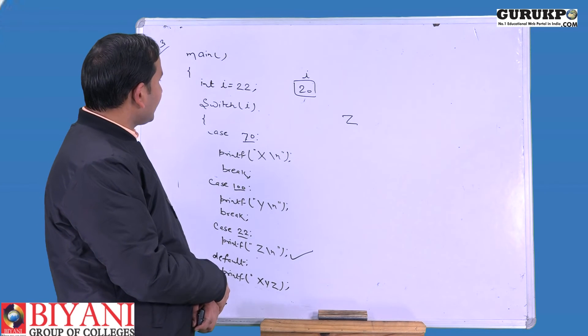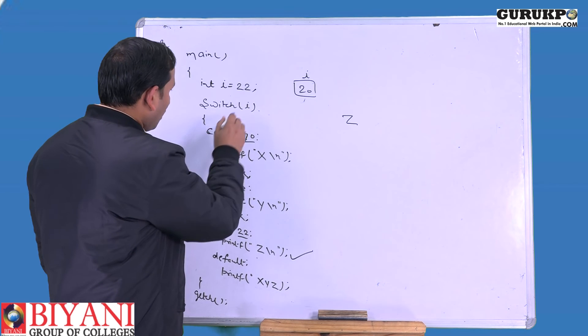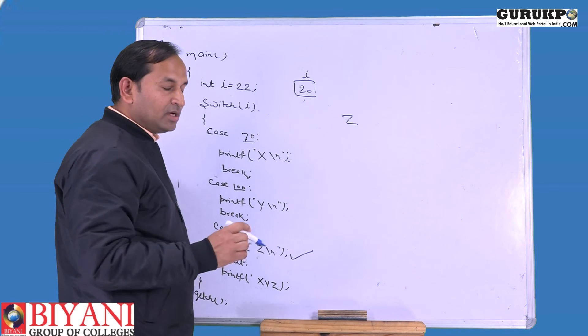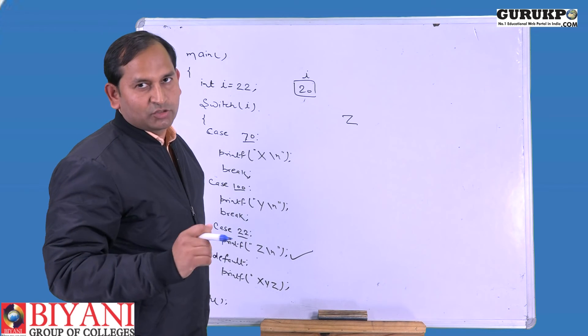In this given example, we can easily observe all three cases: case 70, case 100, and case 22. There is no ascending or descending situation.